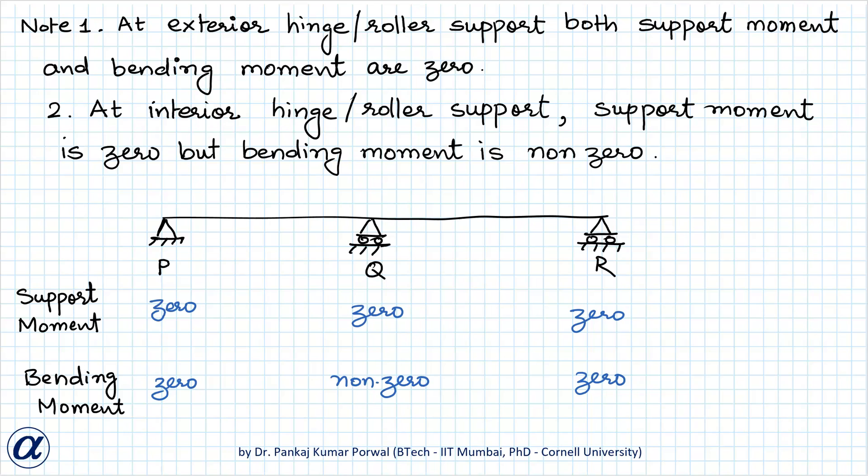Now, there are some important points that we have to keep in mind when solving the equation of theorem of 3-moment and first is knowing the difference between support moment and bending moment. The support moment is moment of resistance provided by different types of supports. For example, the fixed support which is shown like this provides non-zero support moment whereas the hinge support and roller support provide zero support moment.